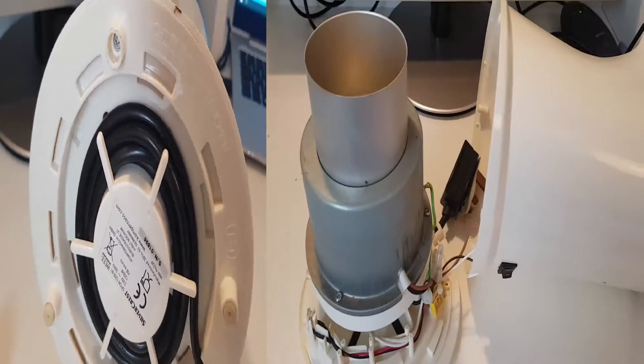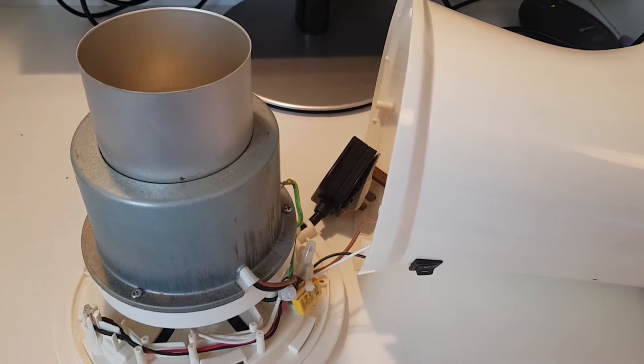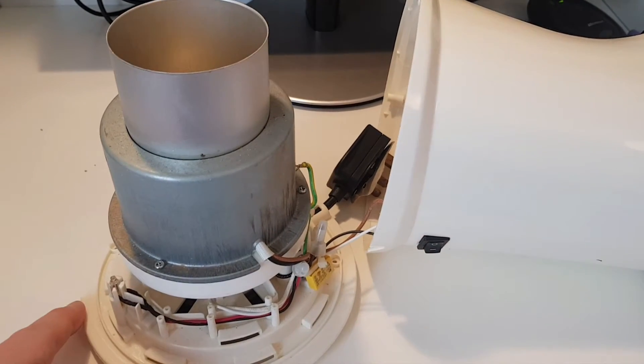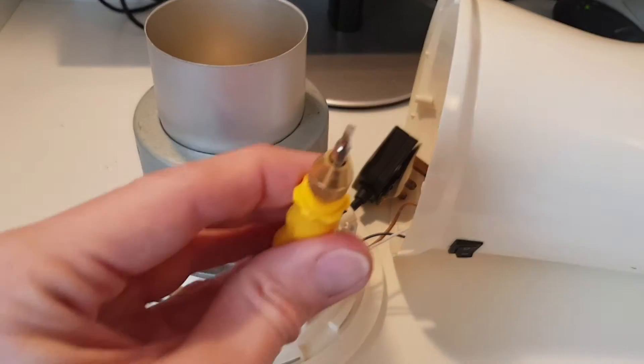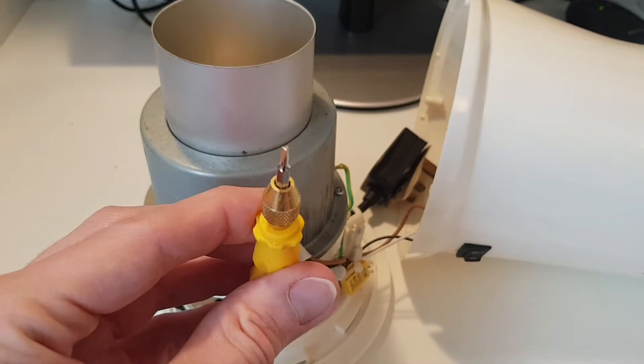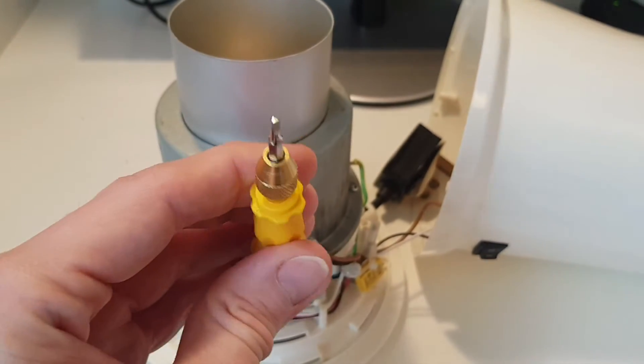Okay, so once you've undone the four screws, the main bit of the popcorn maker just comes straight out. Worth noting is that you do need a special screwdriver for this - this is like a kind of triangular head that's needed to undo some of those screws.